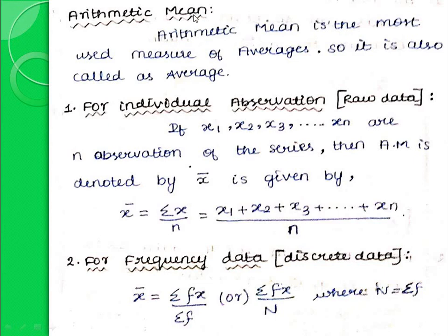First one is Arithmetic mean. Arithmetic mean is the most used measure of averages, so it is also called as Average. Three methods are there. First one, for Individual Observation — that is Raw Data or Ungrouped Data — if x1, x2, x3, etc., xn are n observations of the series, then Arithmetic mean, denoted by x-bar, is given by x-bar is equal to summation x by n.